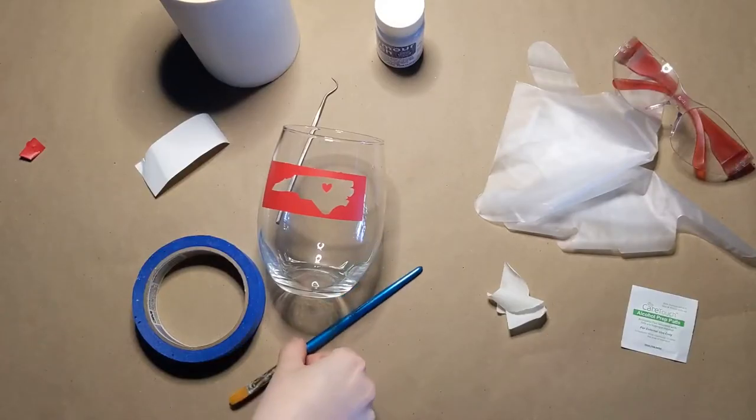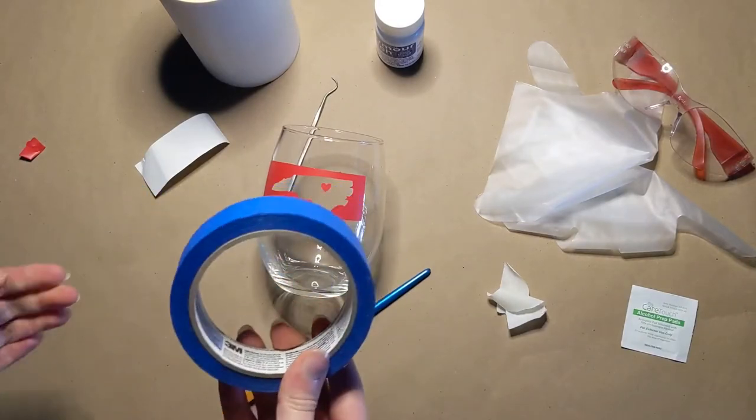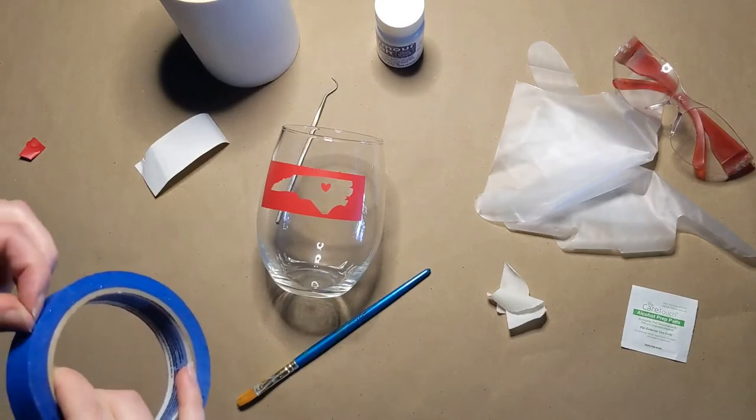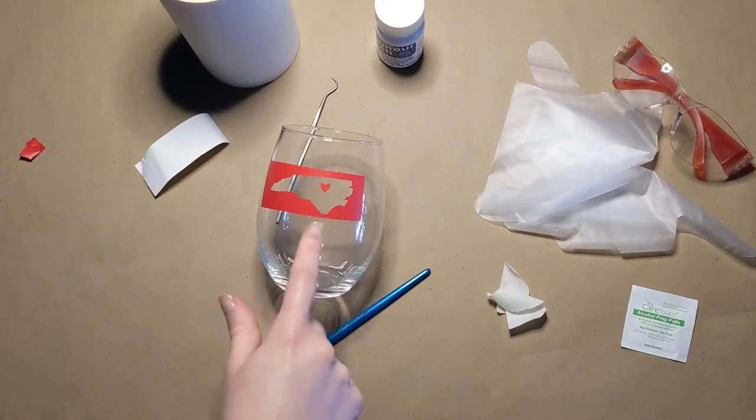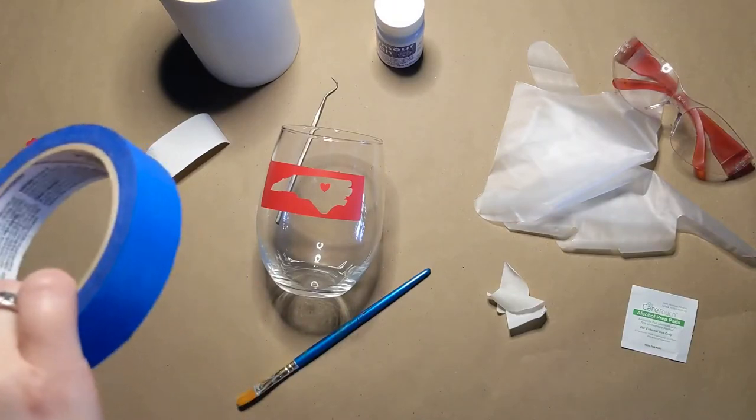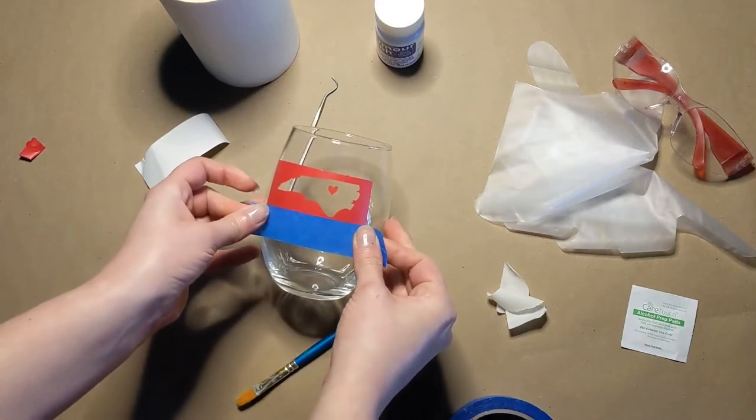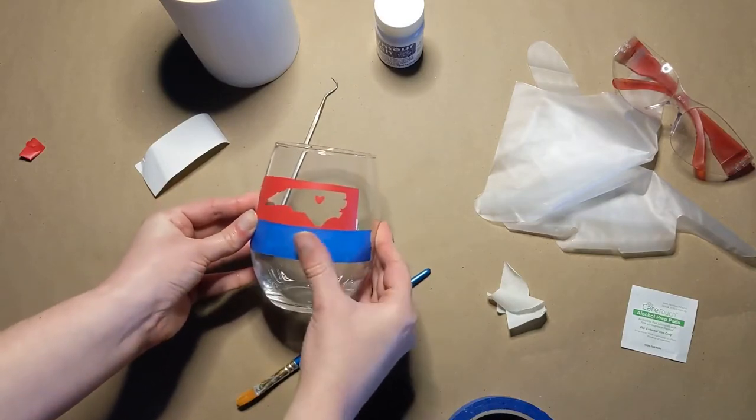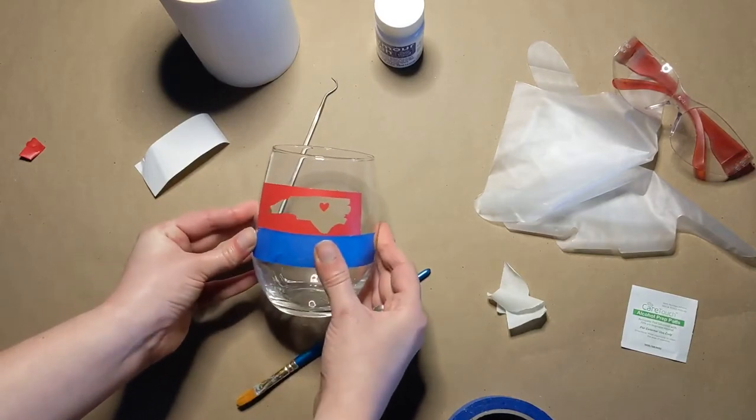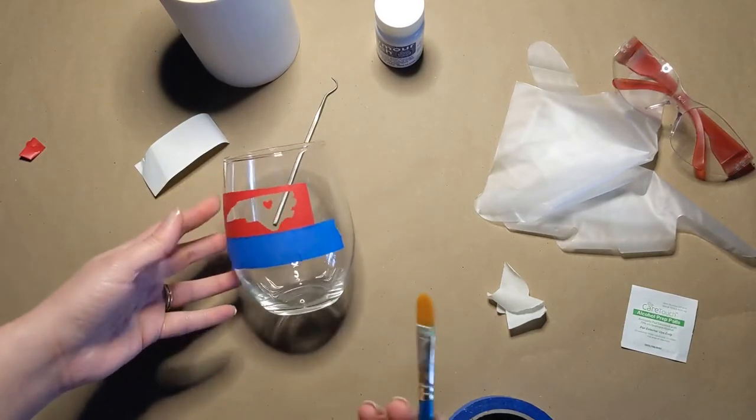I forgot to mention a couple of materials that we want to use. One is painter's tape. This is actually optional. It's just kind of something you want to use if you have like a really thin line down here, like at the very bottom of this stencil. You may want to add some painter's tape just to go ahead and protect the glass, because anything that that etching cream touches, it's going to etch.